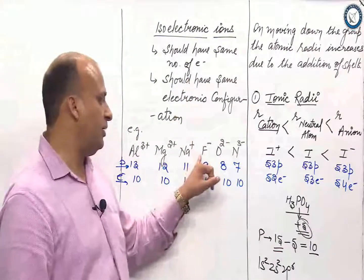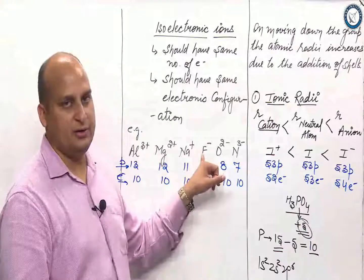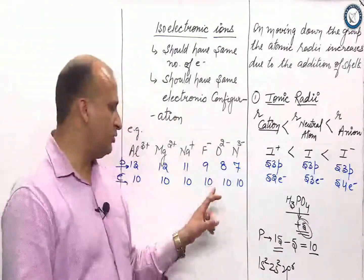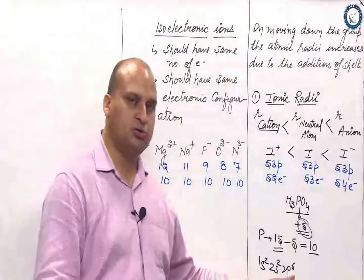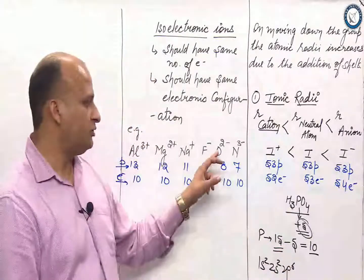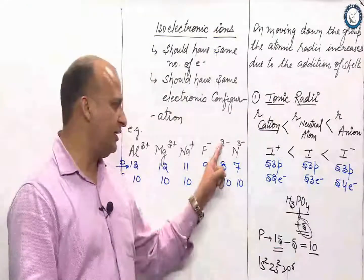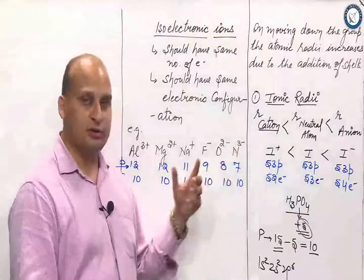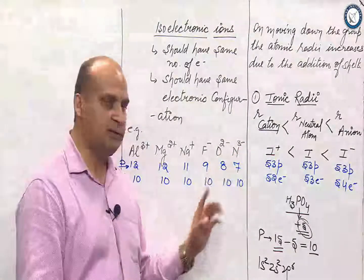Likewise, how many electrons fluorine is having? You will say 9. F minus means 10. So, what is the electronic configuration of 10? 1s2, 2s2, 2p6. Oxygen is having 8 electrons, it gains 2, so becomes 10. Nitrogen has got 7, gains 3, so becomes 10.